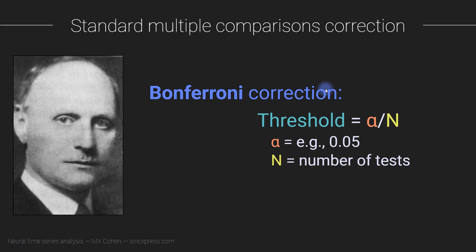The Bonferroni correction formula is to take your p-value threshold — typically 0.05 — and divide it by n, where n is the number of tests you are implementing. That gives you the new p-value threshold. For example, with a threshold of 0.05 and five tests, your new threshold would be 0.05 divided by 5, which equals 0.01.